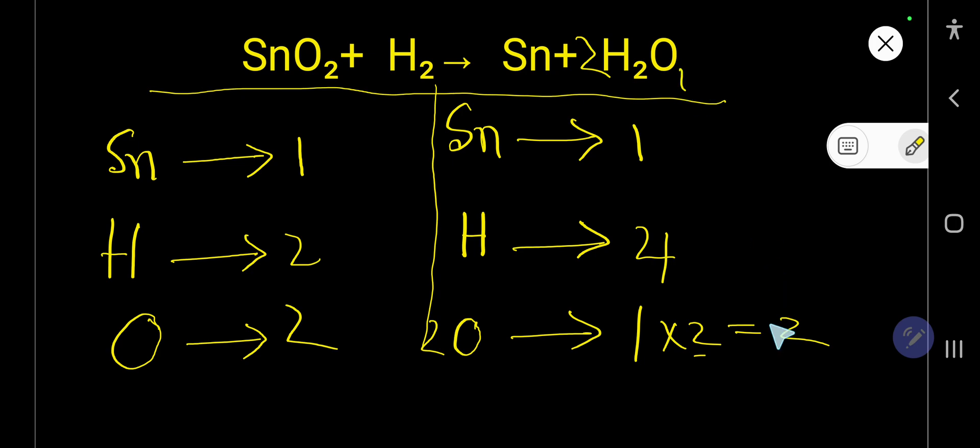As subscript one we don't write, then we have here two, here four. So to balance hydrogen I can multiply here by two, that gives me four. And if you multiply by something, that something must come before the atom.